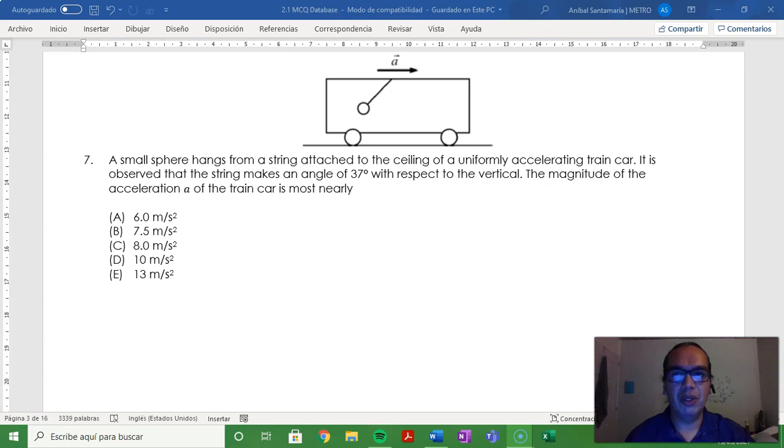Number 7. A small sphere hangs from a string attached to a ceiling of a uniformly accelerating train car. It is observed that the string makes an angle of 37 degrees with respect to the vertical. The magnitude of the acceleration A of the train car is most nearly?